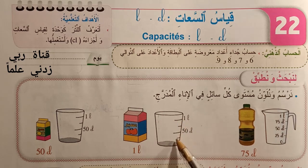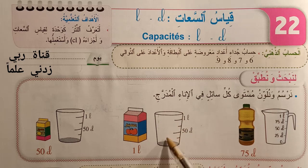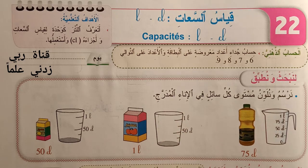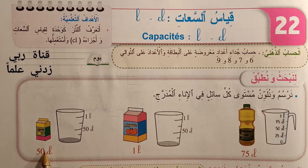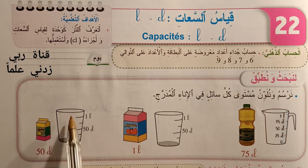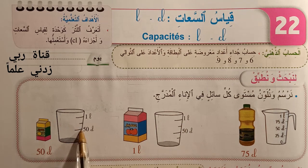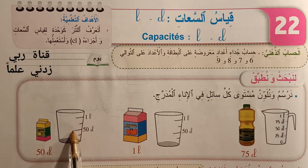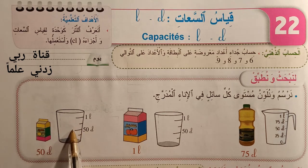ونلون الجزء الموجود في الأسفل. وهنا لدينا عاصير به 50 cm، كذلك عندما نصبه في الإناء سيصل إلى 50 cm. ونرسم خطاً أفقياً كذا.